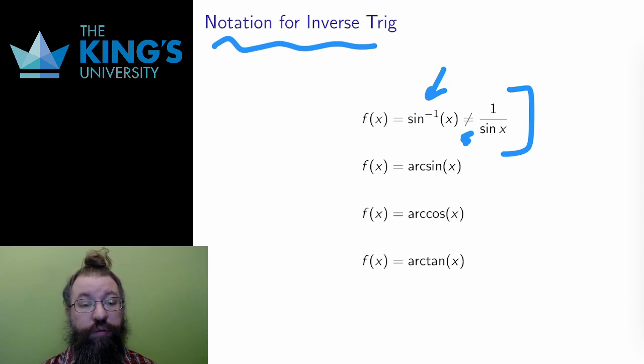To avoid this confusion, I choose a different notation. I write arc in front of the trig function to indicate the inverse. Therefore, the inverse of sine is arcsine, and similarly for cosine, arc cosine, tangent, arctangent, and so on. This, I feel, is a much clearer notation.